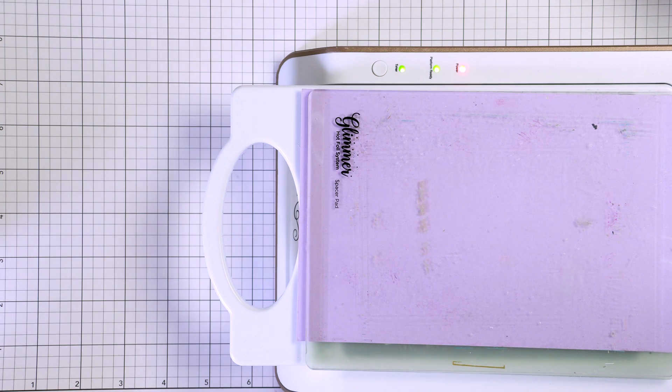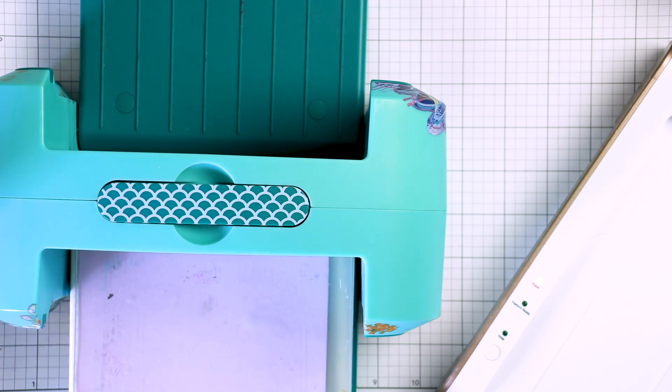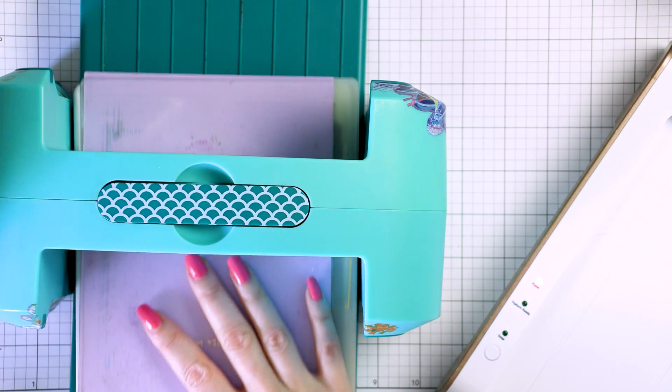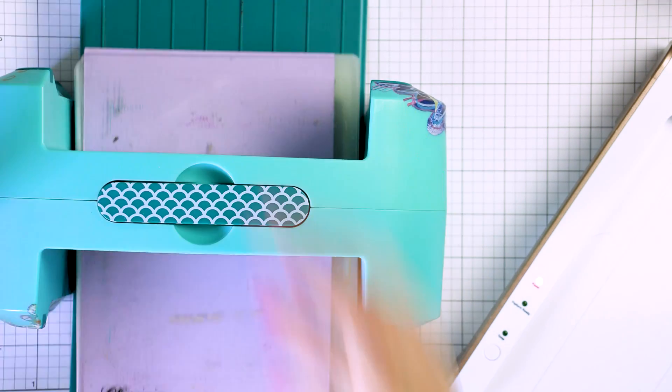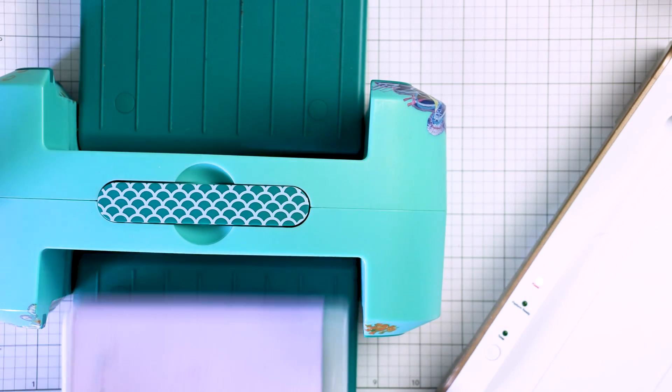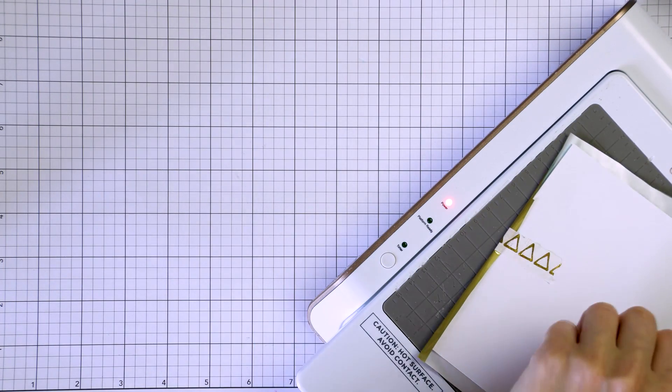But the need to add the cardstock shim will depend on your die cutting machine. Some machines don't need any shims while other machines give better results with the shim involved. This is just something you'll need to test personally for your die cutting machine. Once the light has stopped flashing, take the platform from the docking station and run it through your die cutting machine to foil. Go very slow, then go back and place the platform back into the docking station so that it remains hot and you can continue foiling.